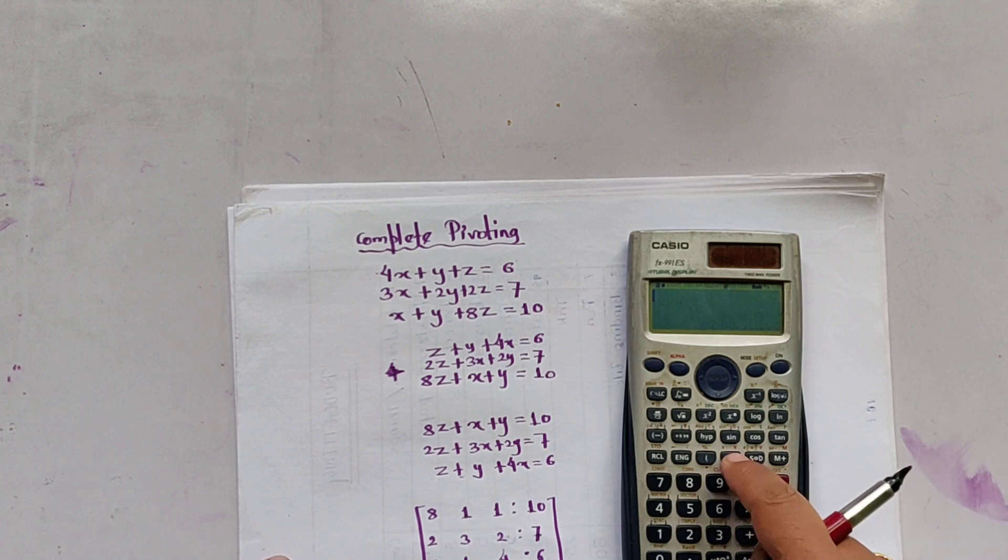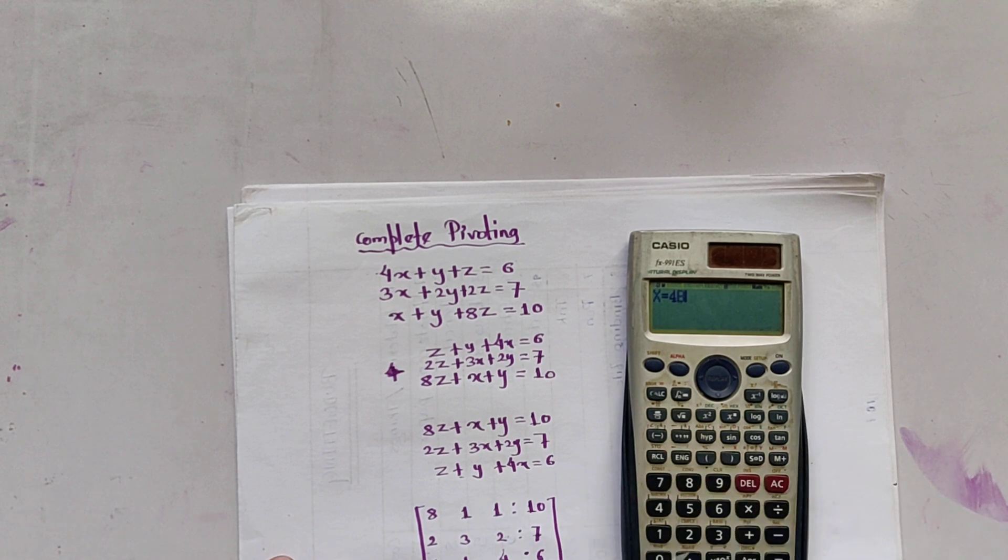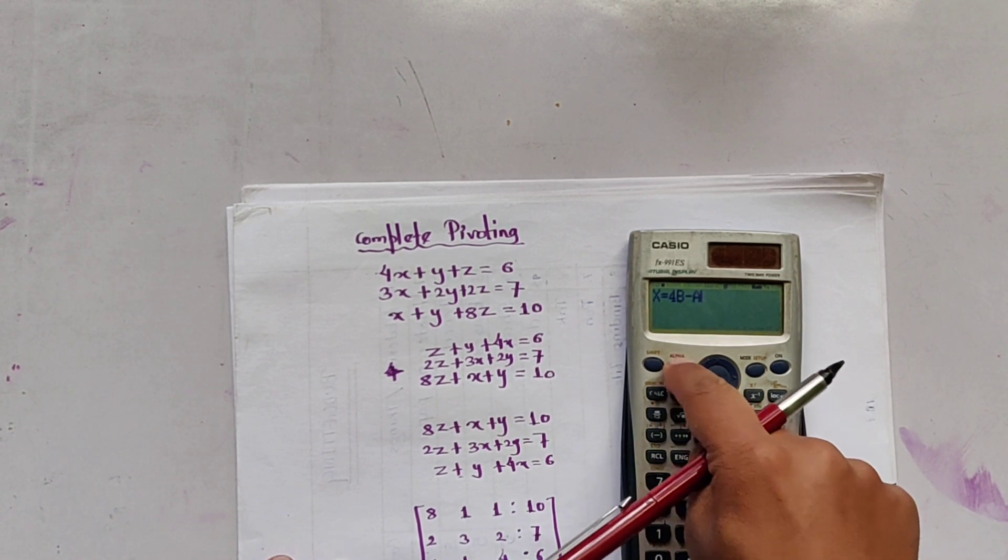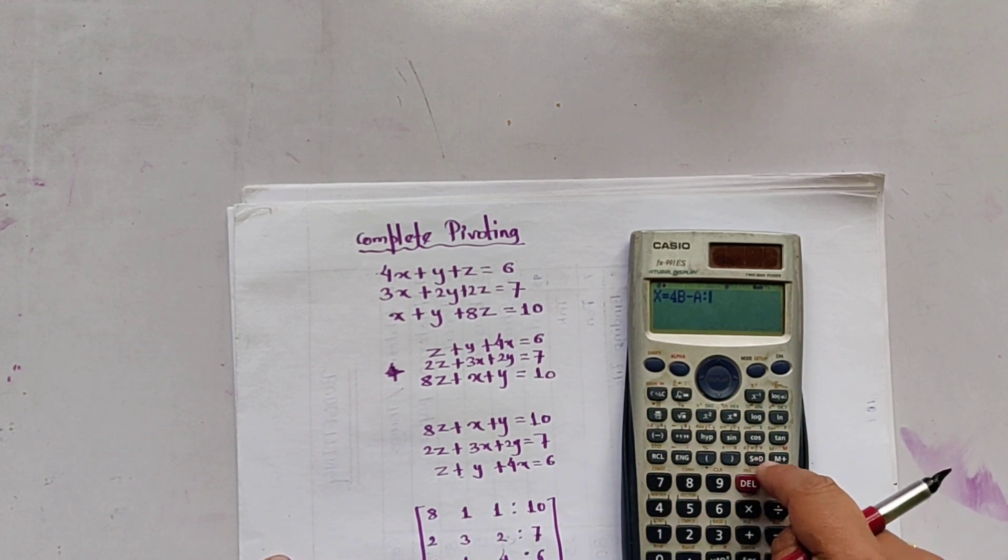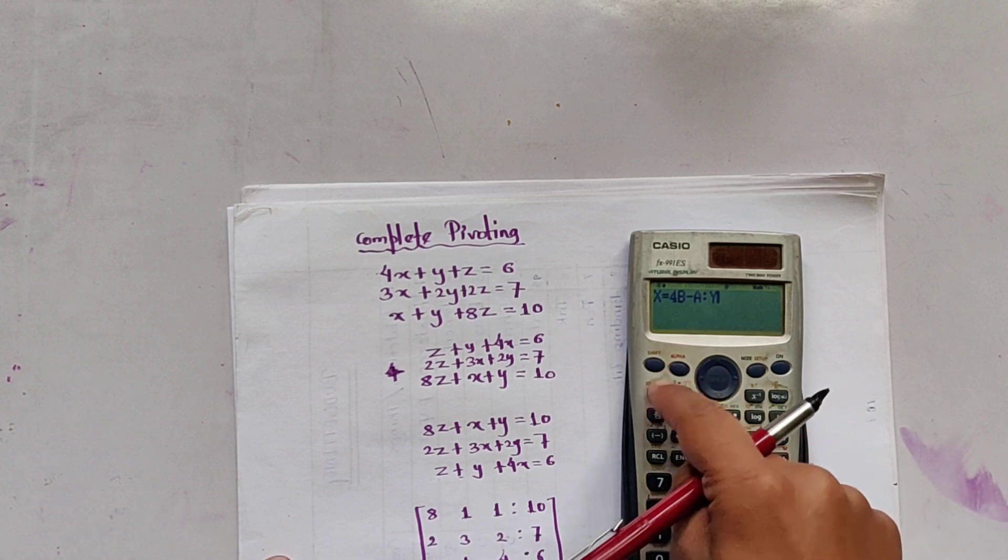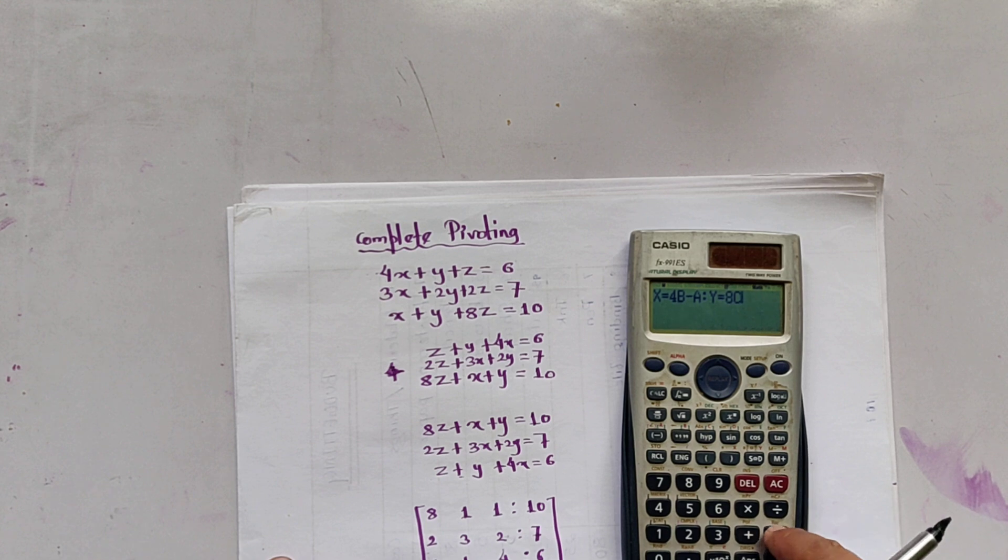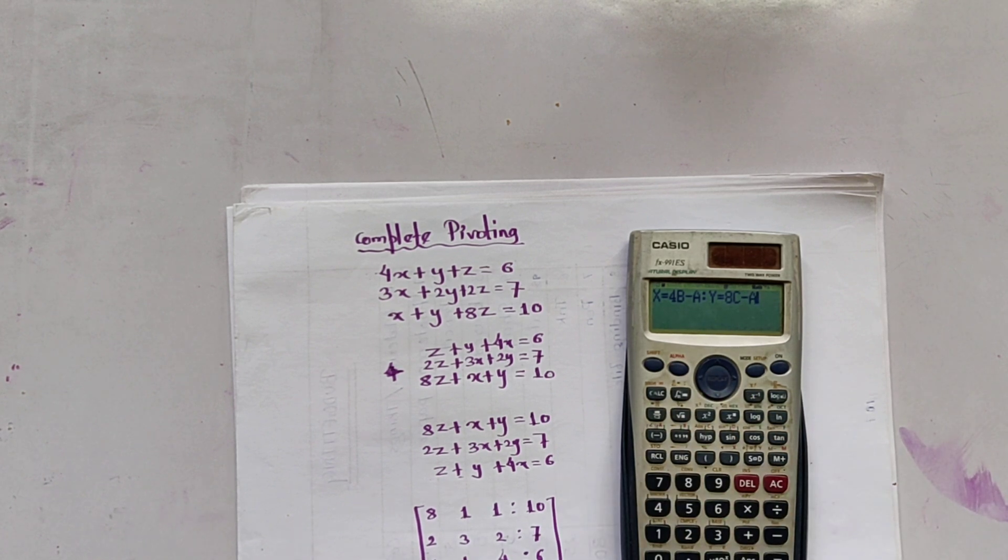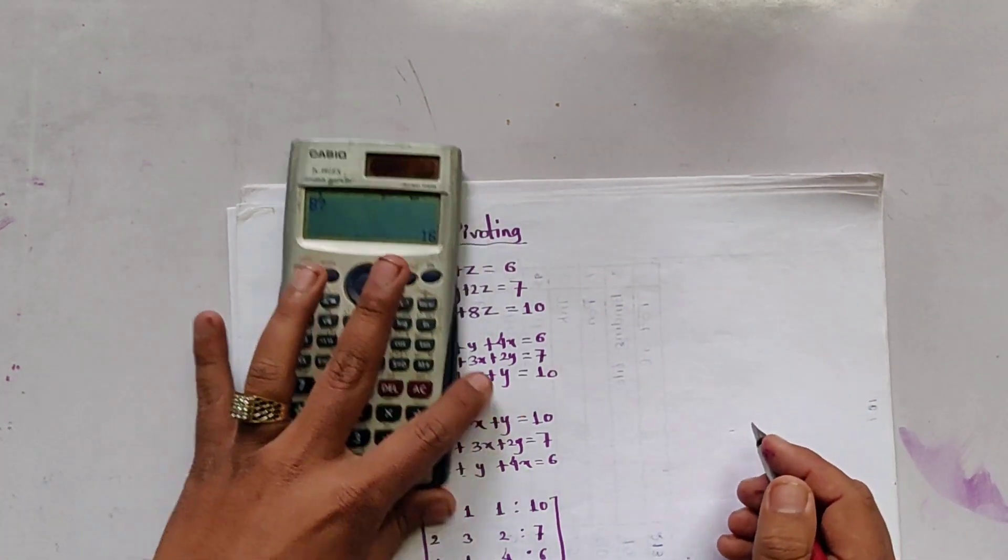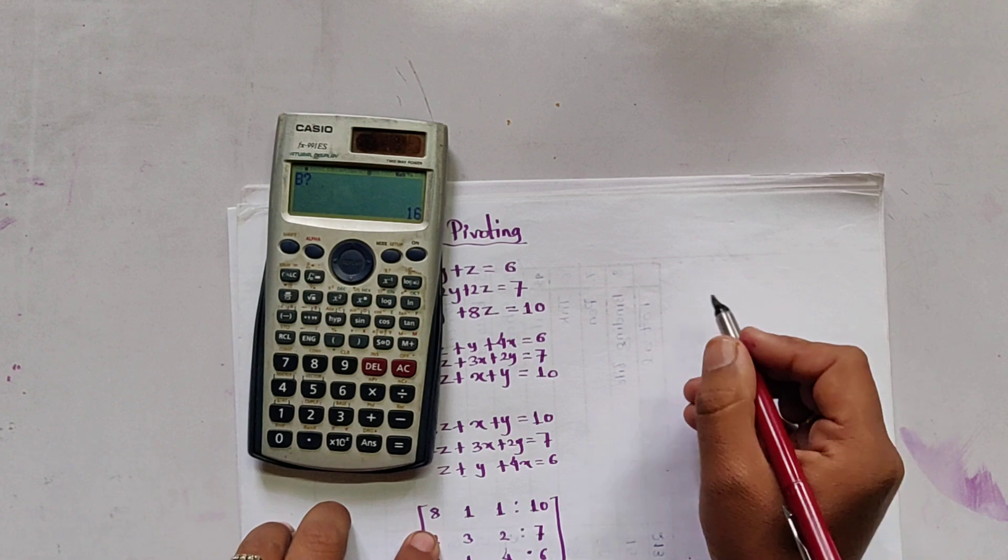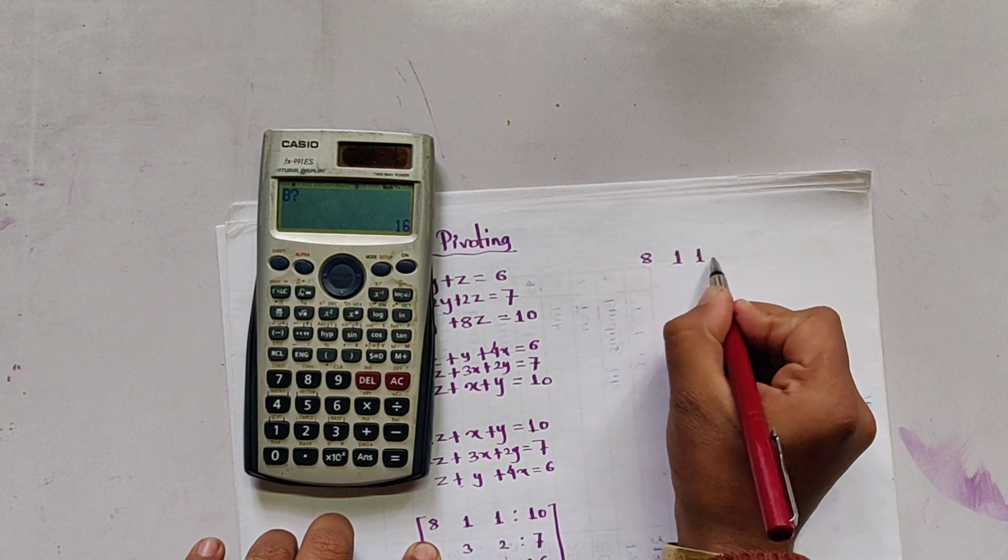R2, X equals 4 times R2 is B minus R1 is A. R3, let us suppose it as Y. Y equals 8 times R3, so C minus A. R1 is A. So let us calculate it. I am writing the upper terms: 8, 1, 1, 10.